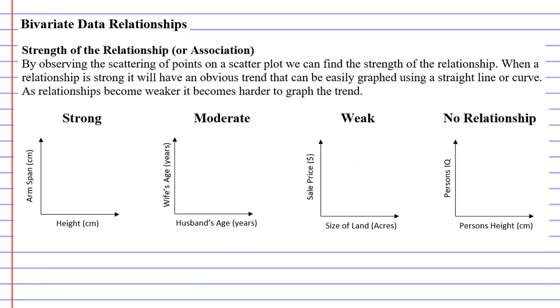The first thing we're going to talk about is what is known as the strength of the relationship or the strength of the association. Remembering that relationship and association mean the same thing, let's look at a scatter plot that has a strong relationship or a strong association.